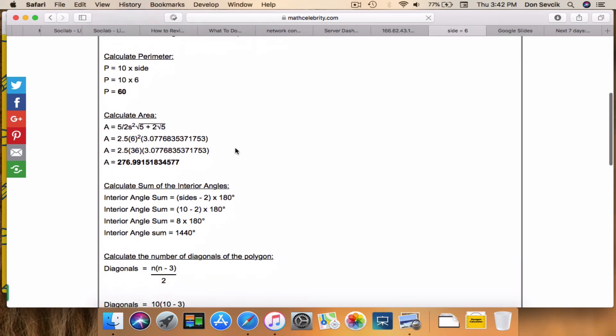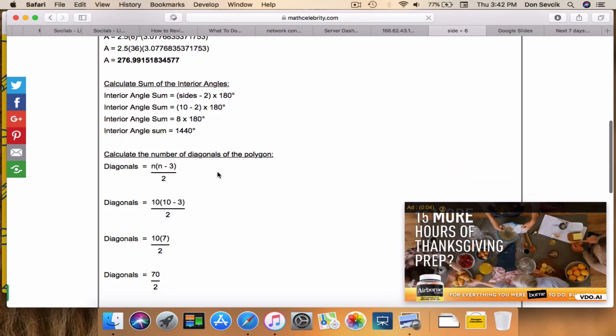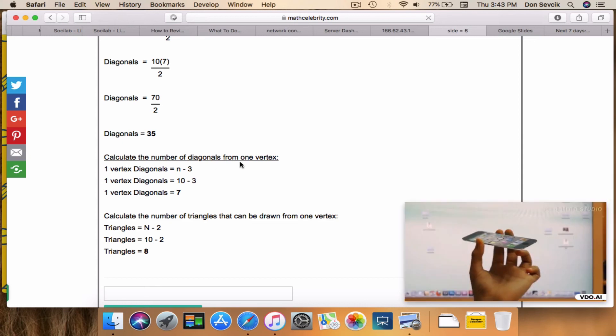So we've got perimeter, area, sum of interior angles, number of diagonals of the polygon, number of diagonals from one vertex, and finally, number of triangles that can be drawn from one vertex.